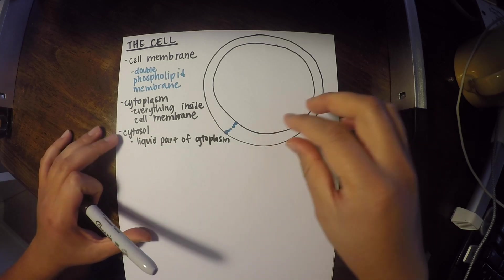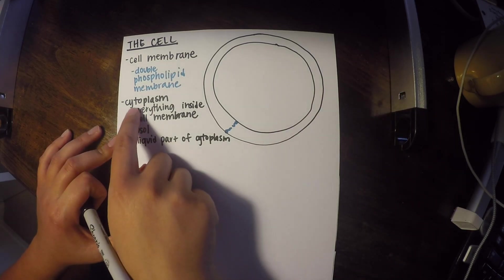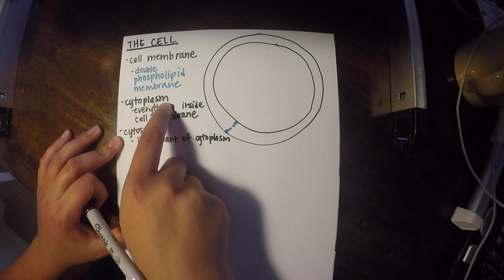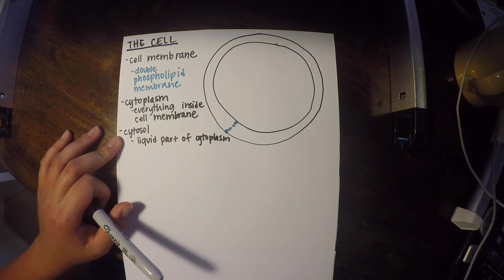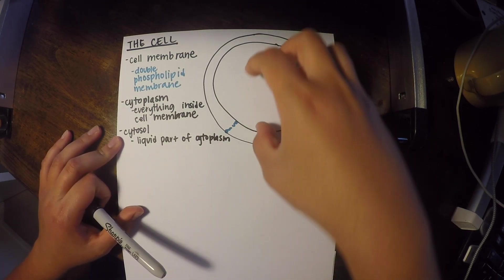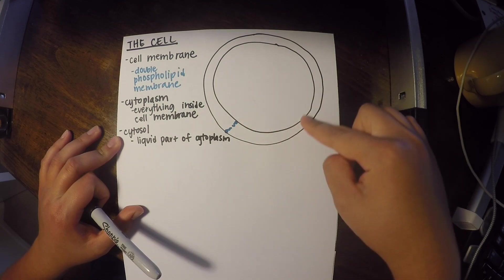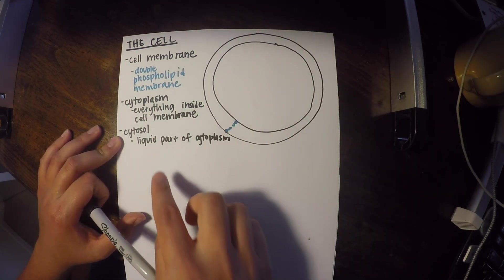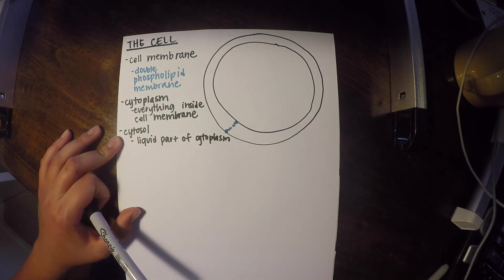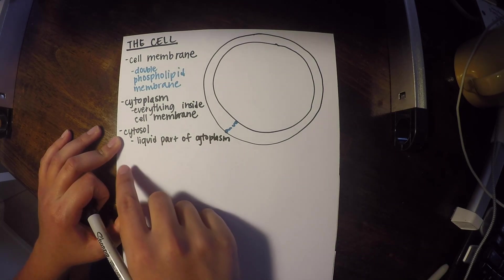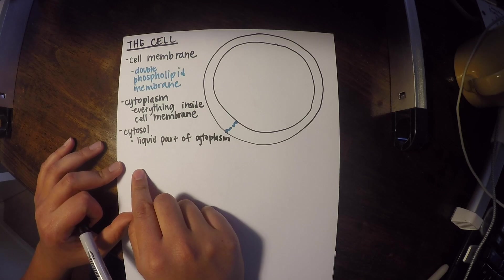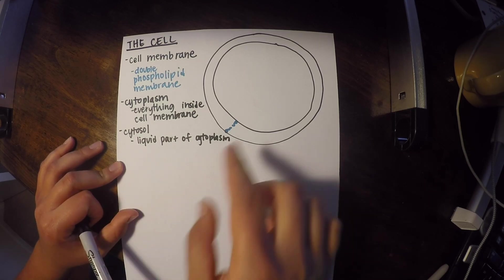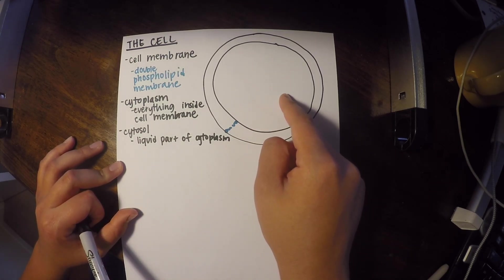So you can think about the cytoplasm. I like to think of it as that's a longer word, so it kind of means like it contains more. So it's everything inside of here, outside of the nucleus. And then this cytosol is just the liquid or aqueous part of the cytoplasm.